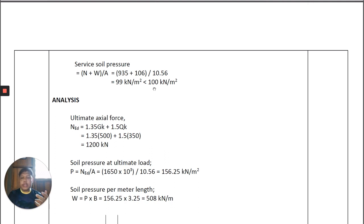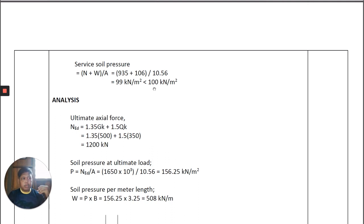If the service soil pressure exceeds the soil bearing capacity, we must either change the footing size — by increasing it — or improve the soil, for example by excavating low-capacity soil and replacing it with better fill, then re-checking the bearing capacity. A value of 100 kN/m² is quite high, so when proposing a footing size, be careful not to make it too large relative to the required area, to ensure the soil pressure remains within acceptable limits.